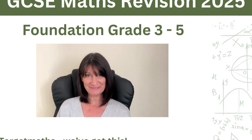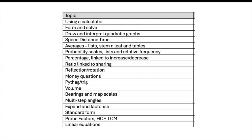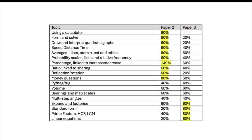These are the results — this is the first of three lists. These topics are the most common; they've come up more than any other, but they're not just coming up on paper two — they're being distributed across paper two and paper three. We can see that these topics here are coming up more often on paper two than on paper three.